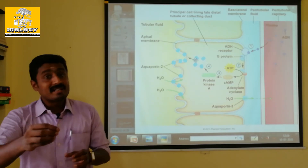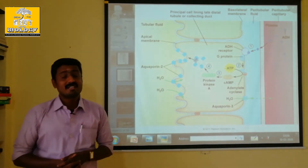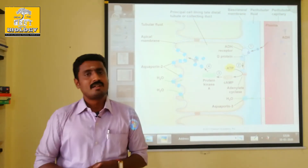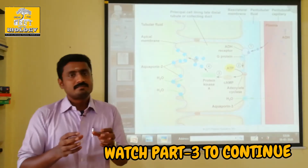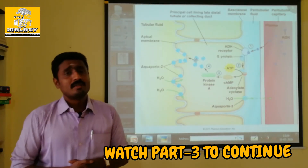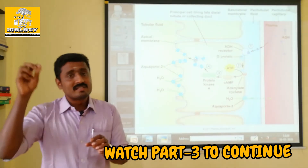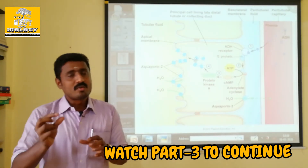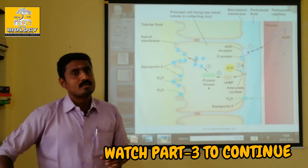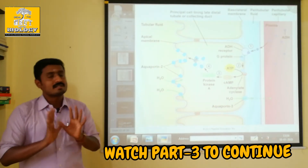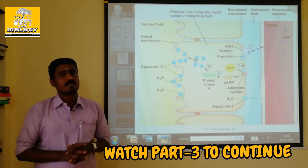The pancreas — produced by the islets of Langerhans — and beta cells produce insulin. The insulin then binds to the insulin receptor, allowing glucose to enter the cell.